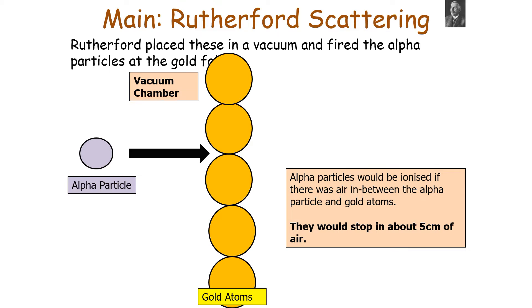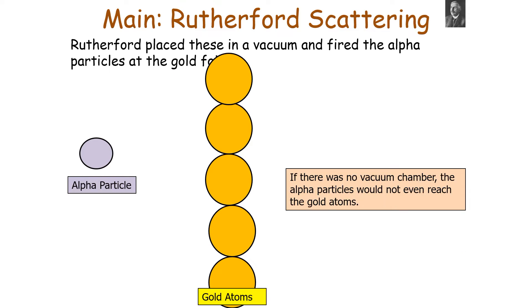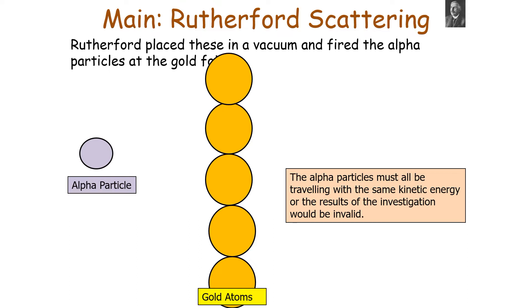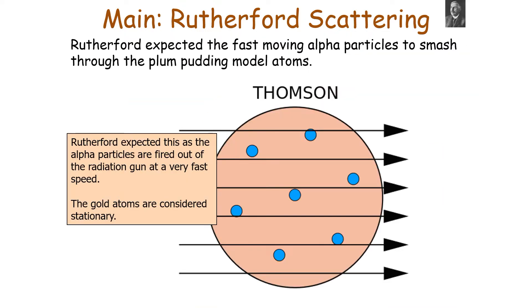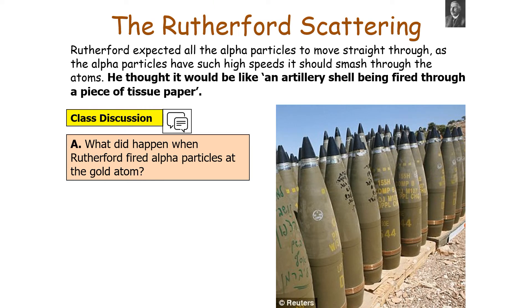It's important to use a vacuum chamber because alpha particles would be stopped by air — they would stop within about five centimetres of air, so without the vacuum the alpha particles would never have reached the gold atoms. Additionally, the alpha particles must all travel with the same kinetic energy, otherwise the results would be invalid. Rutherford placed an alpha particle detector beyond the gold foil, moved it to different angles, fired the alpha particles, and measured what happened to them after passing through. He expected the fast-moving alpha particles to smash straight through the plum pudding model atoms, like an artillery shell fired through tissue paper.